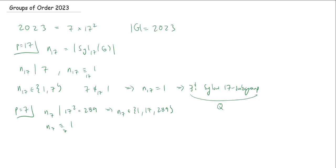And 289, well, let's see. 7 goes into 280. So then it goes into 287. So 289 is going to be congruent to 2 mod 7. So that doesn't work either. So in fact, this implies that also N_7 is equal to 1.